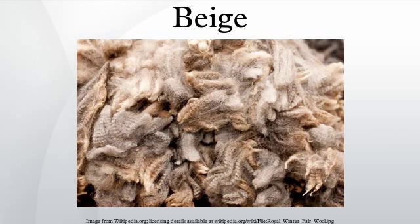The color unbleached silk is shown at right. This color is one of the Japanese traditional colors in use since 660 CE, in the form of various dyes used in designing kimonos. The name of this color in Japanese is Shironeri.